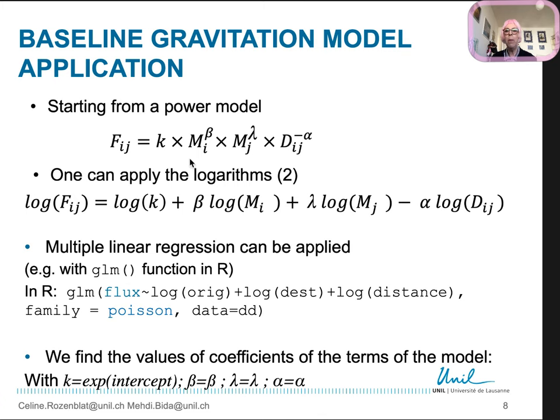The simpler baseline gravitation model we can apply is the power model. The masses have exponents beta and lambda and the distance alpha. One can apply the neperian logarithm to all the elements to come back to a linear simple equation. Therefore, it is easier to apply a multiple regression, for example, in R. The family of the function can be Poisson because we are in logarithms.